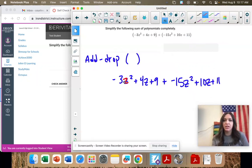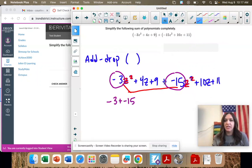So z squared and z squared. These are the same like term. And we're adding or subtracting the coefficient. So negative three plus negative 15 is negative 18. And then the z squared just comes along. So those are done.